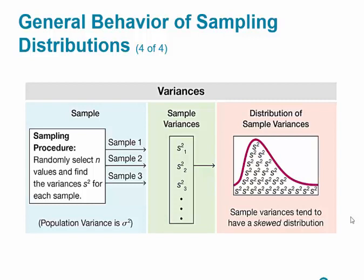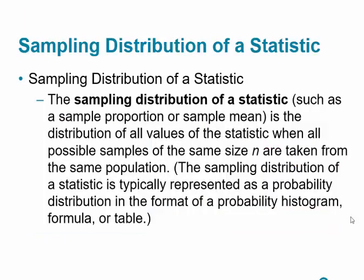Also with variances — we select n values and find the variance S-squared for each sample. For this particular case, the distribution of the sample variances tends to be skewed. They don't actually follow a normal curve.